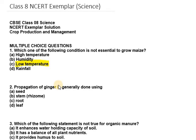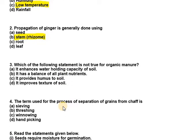The second question: propagation of ginger is generally done using — seed, stem, root, or leaf? In the case of ginger, propagation takes place through the stem, or you can say the rhizome.